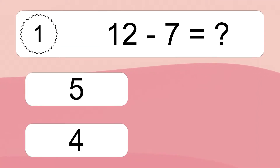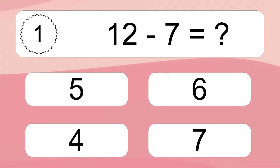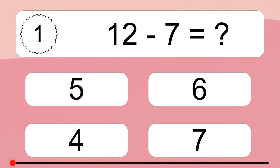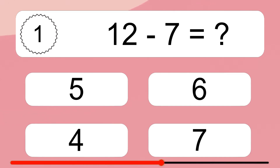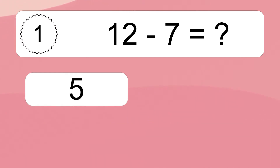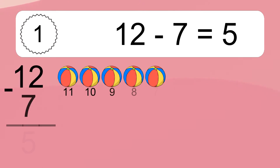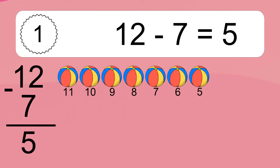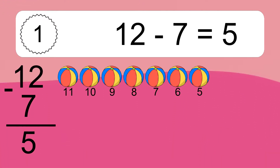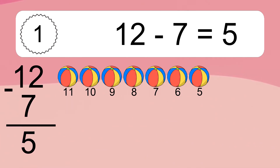12 minus 7 equals what? 12 minus 7 equals 5. Let's count it! 11, 10, 9, 8, 7, 6, 5.